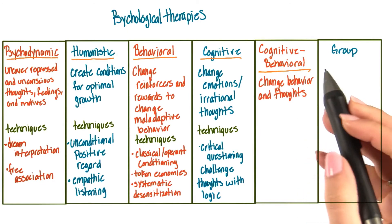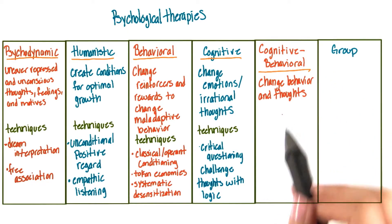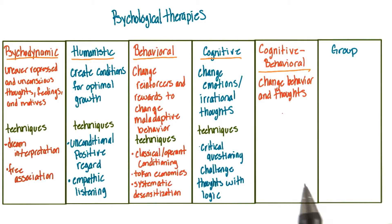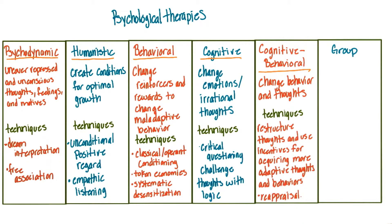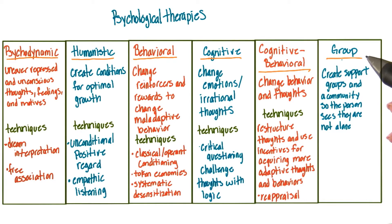The goal of cognitive behavioral therapy is to change behavior and thoughts. The technique used in cognitive behavioral therapy is to restructure thoughts and use incentives for acquiring more adaptive thoughts and behaviors. There's also the use of appraisal.